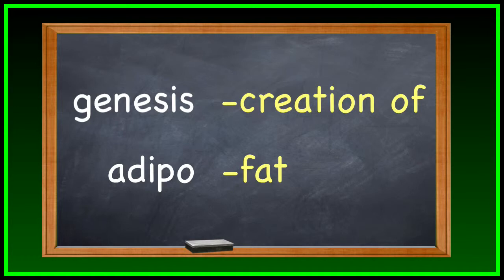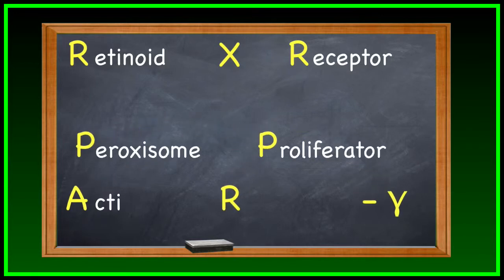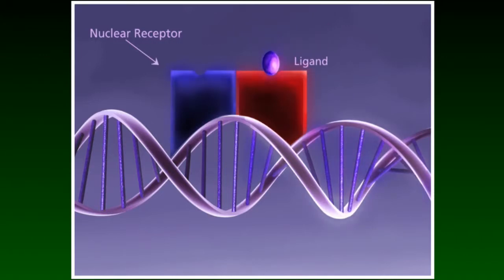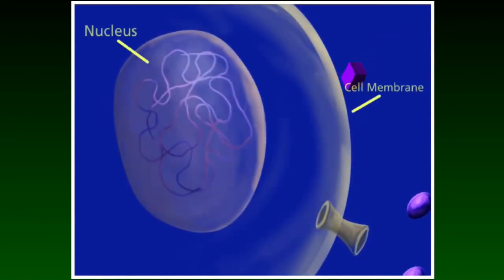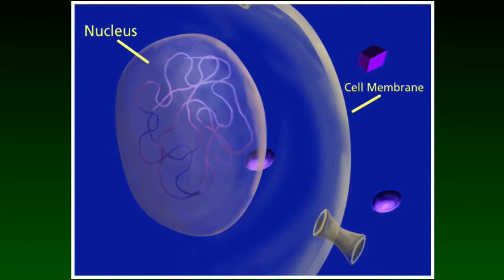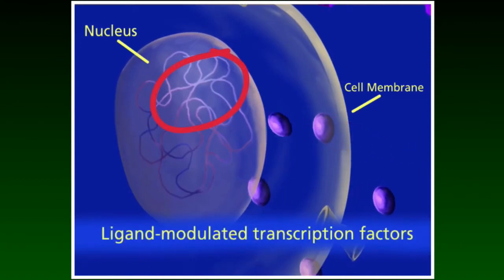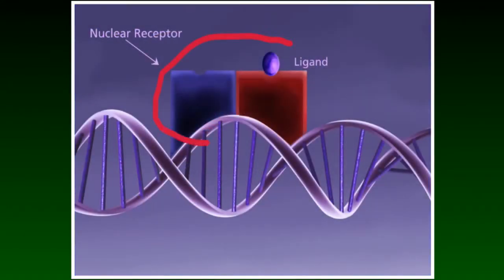Adipogenesis is a complex process that is controlled by many different factors. We're going to focus on two specific ones called RXR, retinoid X receptor, and PPAR gamma, peroxisome proliferator activated receptor gamma. This animation illustrates that receptors are proteins that receive and bind to a specific molecule called a ligand. RXR and PPAR gamma are called nuclear receptors because they act in the nucleus. Nuclear receptors bind directly to a piece of DNA in the nucleus, and are technically termed ligand-modulated transcription factors. This means when the receptor binds to its ligand — usually a hormone such as estradiol or cortisol — the receptor-ligand complex binds to DNA and turns genes on or off directly.